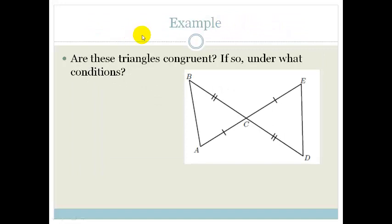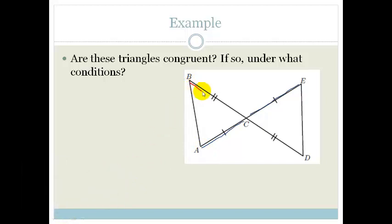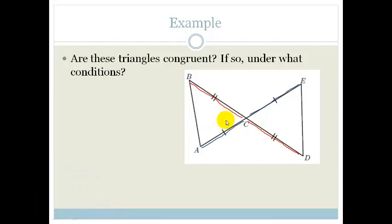Now let's do an example. Are these two triangles congruent, and if so, under what conditions? The triangles are triangle ABC and triangle ECD. We can see that EC equals AC, and BC equals CD — both given. We also know that vertically opposite angles are equal, so angle ACB equals angle ECD. Therefore we can go single line, angle, double line for both triangles — these two triangles are congruent.